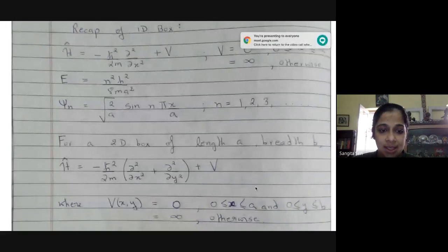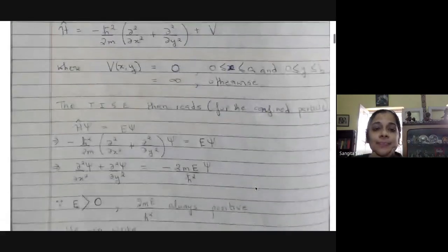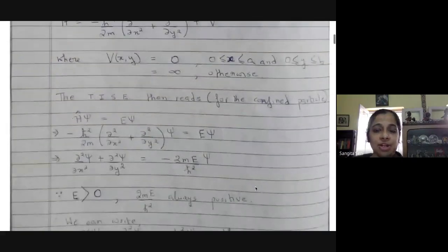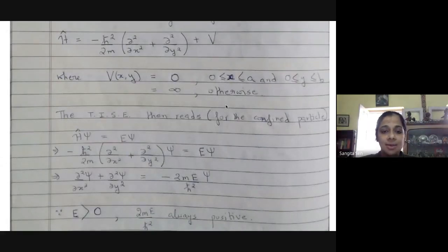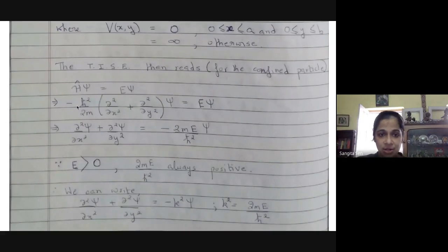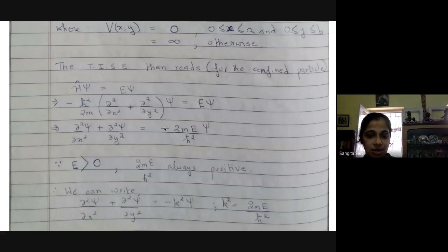We can return to the two-dimensional box. We have a potential which is zero inside the rectangle and infinite outside. We can write the time-independent Schrödinger equation with the kinetic energy operator having the x-direction kinetic energy and the kinetic energy in the y direction, then rearrange it a little bit.